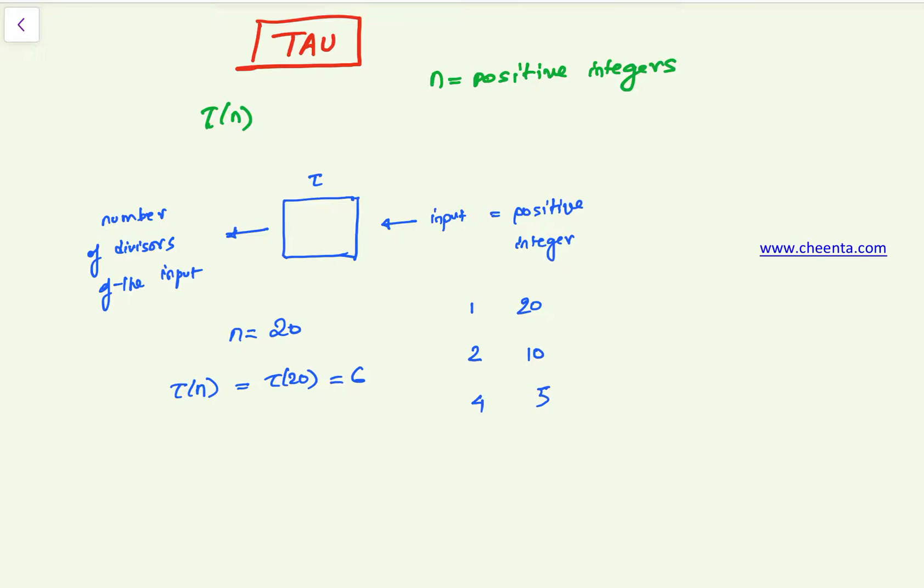So there are six of them, so tau of 20 equals 6. Of course we need a formula for this kind of computation, but for small numbers we can directly count them as we did it right now. And similarly we will have tau of some other numbers and we want to know how to compute tau of any number.